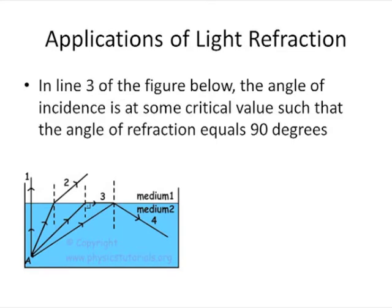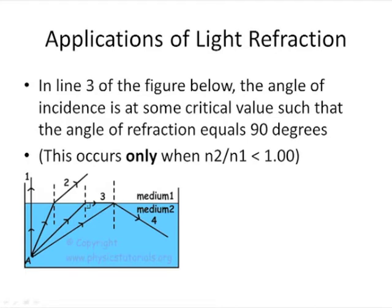We can see that medium one would be what? Less dense or more dense? Medium one. If you think less dense, you'd be correct because the angle is bending away from the normal as it passes into medium one. So the critical angle is when the refracted angle equals 90 degrees. This will only occur when the ratio of N2 over N1 is less than one. So if the ratio is less than one, that means the numerator has to be less than one.